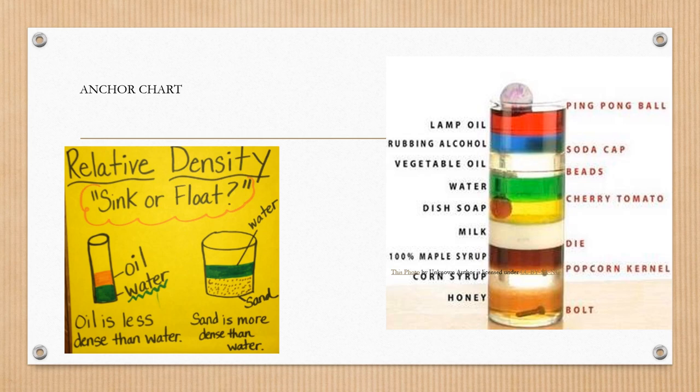The ones that have a higher density than water are the ones that are below, that are sinking, such as the cherry tomato, the soap, milk, dye, syrup, the popcorn kernel, honey. Even the bolt has a higher density than water.